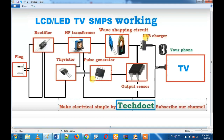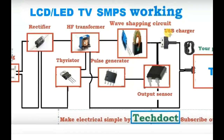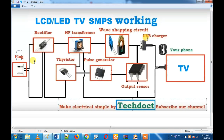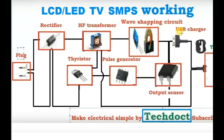In a plug, there is a rectifier unit. In a rectifier unit, there is a high frequency transformer. In a transformer, there is a thyristor series. So we have a closed circuit, then there is a wave shaping circuit, then there is a USB board. We have a stabilizer — the circuit is a filtering circuit. There is a transformer, so we have a high frequency transformer.